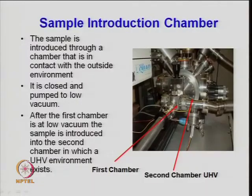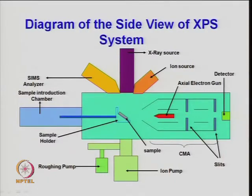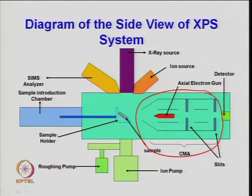XPS provides in-depth analysis. Looking at the actual schematic of XPS: there is an electron gun which provides the energy source hν, and a detector (scintillator) which observes the kinetic energy of the emitted electrons. The assembly is a cylindrical mirror analyzer (CMA). The sample is placed inside and a pump creates the vacuum, since XPS works under vacuum. There is a sample holder, secondary ion mass spectrometer for ion analysis, X-ray source, and ion source.